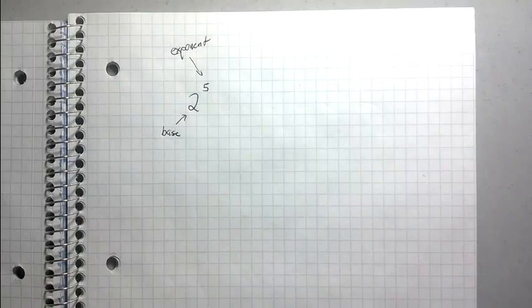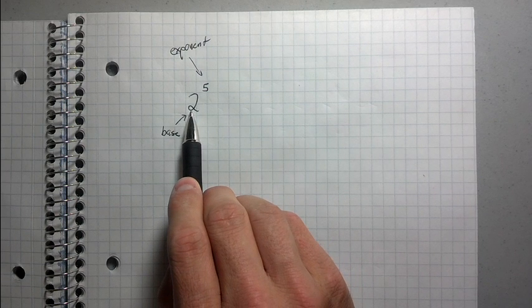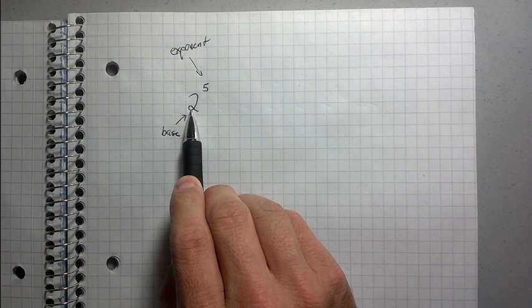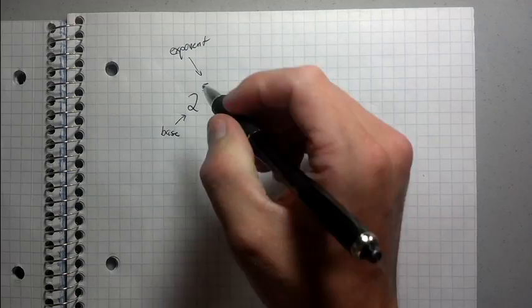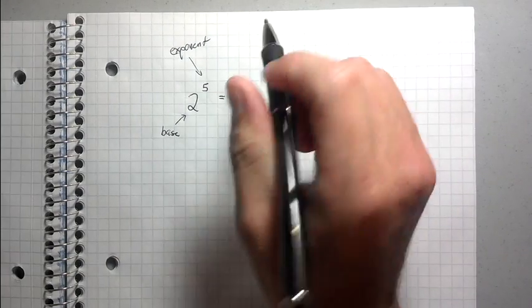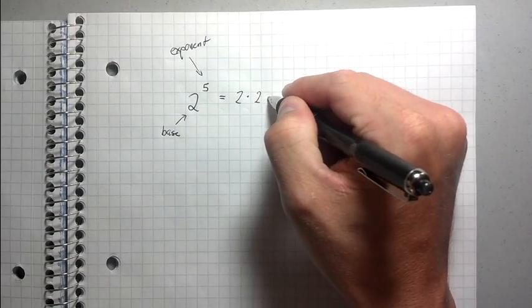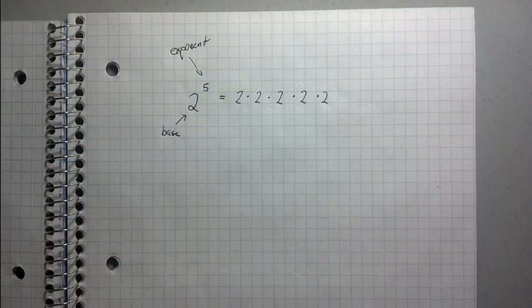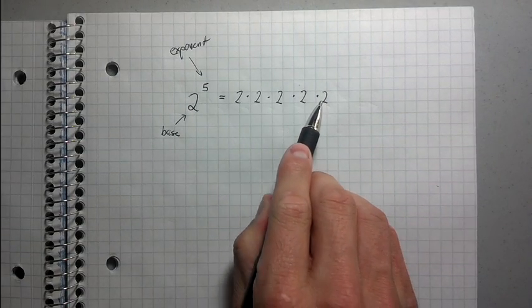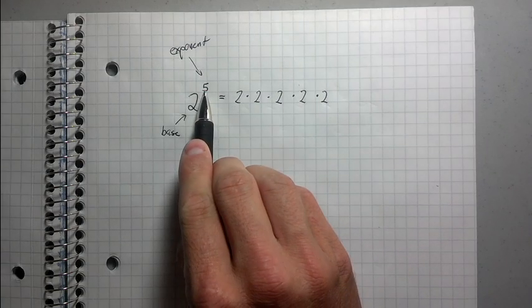Real creative there. Okay, what this means — what an exponent is telling you to do — is it's basically telling you to take 2 and multiply it together 5 times. So I'm going to write this out. What this means is that 2 to the 5th equals 2 times 2 times 2 times 2 times 2. Notice there are five 2's.